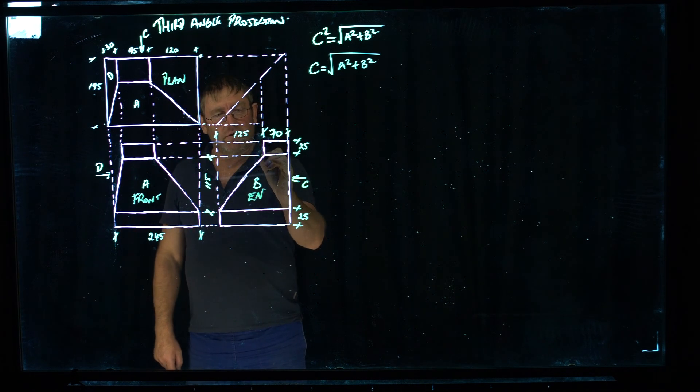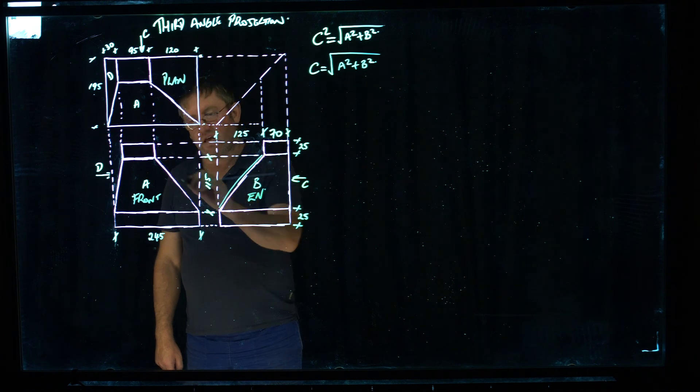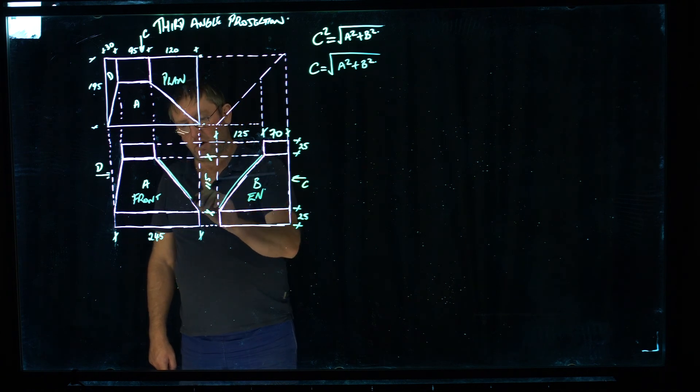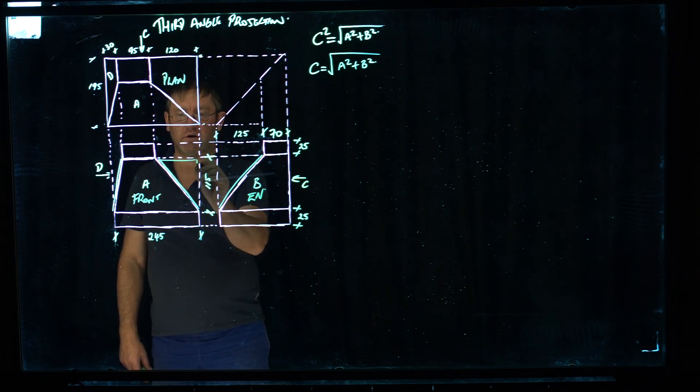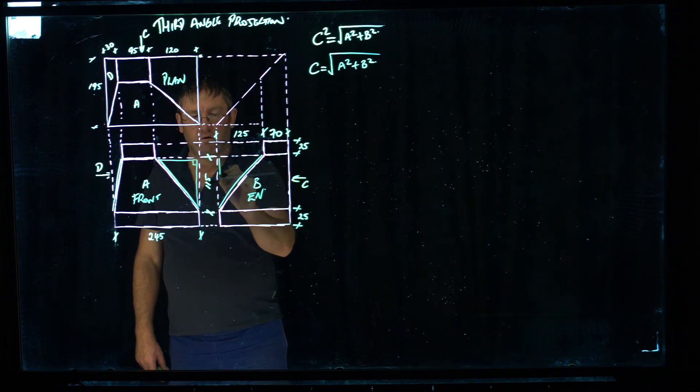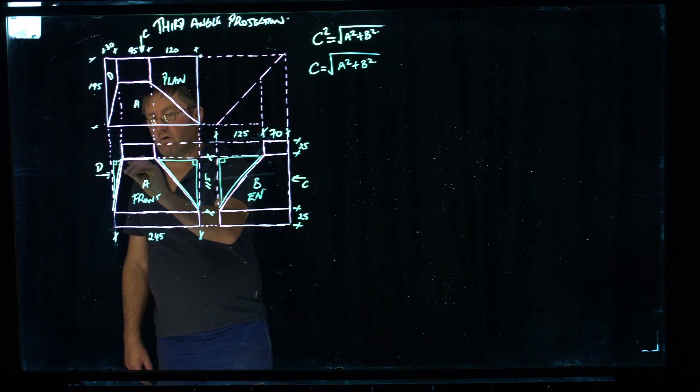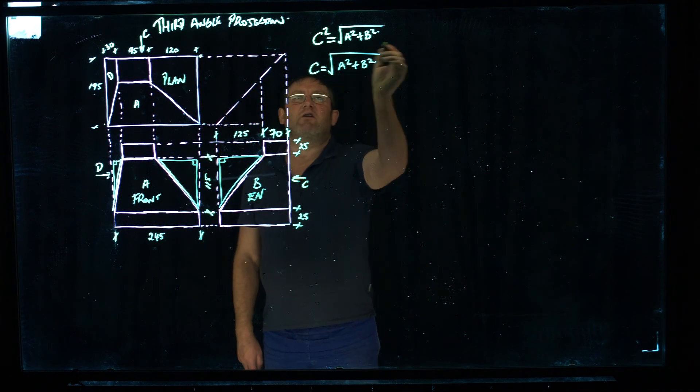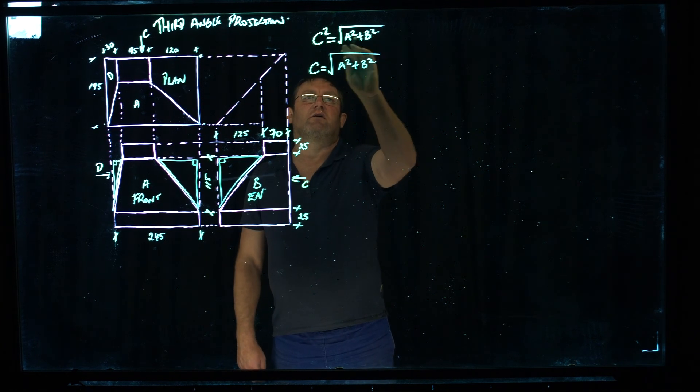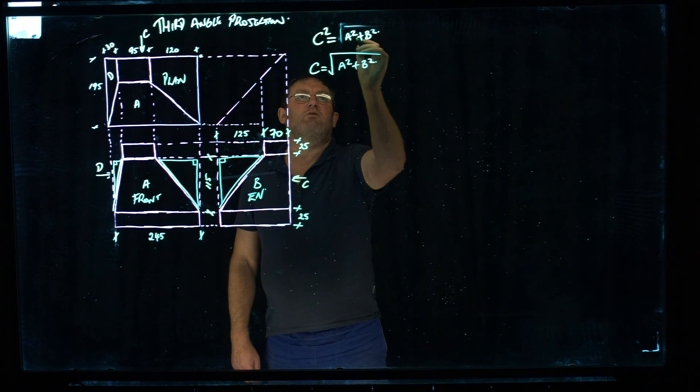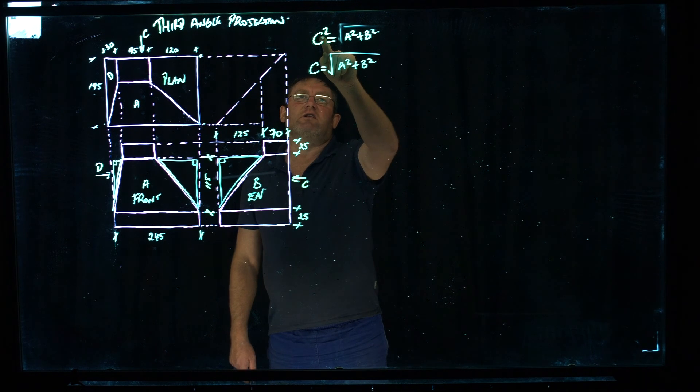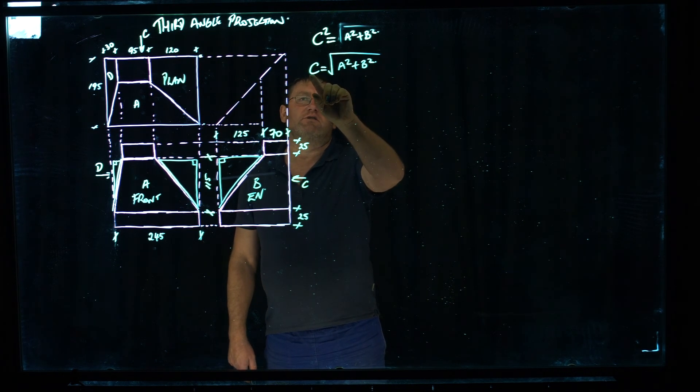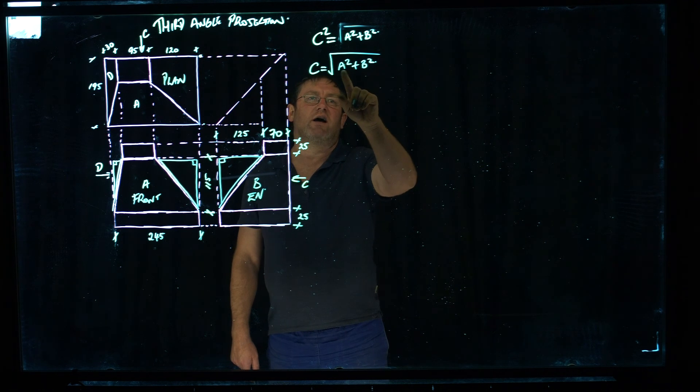So what we're going to do is we're going to work out these true lengths along these lines here. And we're going to use Pythagoras' theorem to work those out. So these, effectively, we can draw in as right-angled triangles in these zones here. Same for that one down there. So Pythagoras' theorem stated that C squared equals A squared plus B squared. And to get back to C, to get rid of the square of something, you square root it on the other side. So C equals the square root of A squared plus B squared.